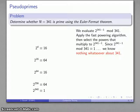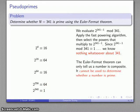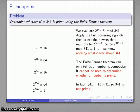The Euler-Fermat theorem tells us that if a number is prime, this congruence is going to hold. It doesn't tell us what happens if the congruence holds. In fact, 341 is a composite number. It's 11 times 31.